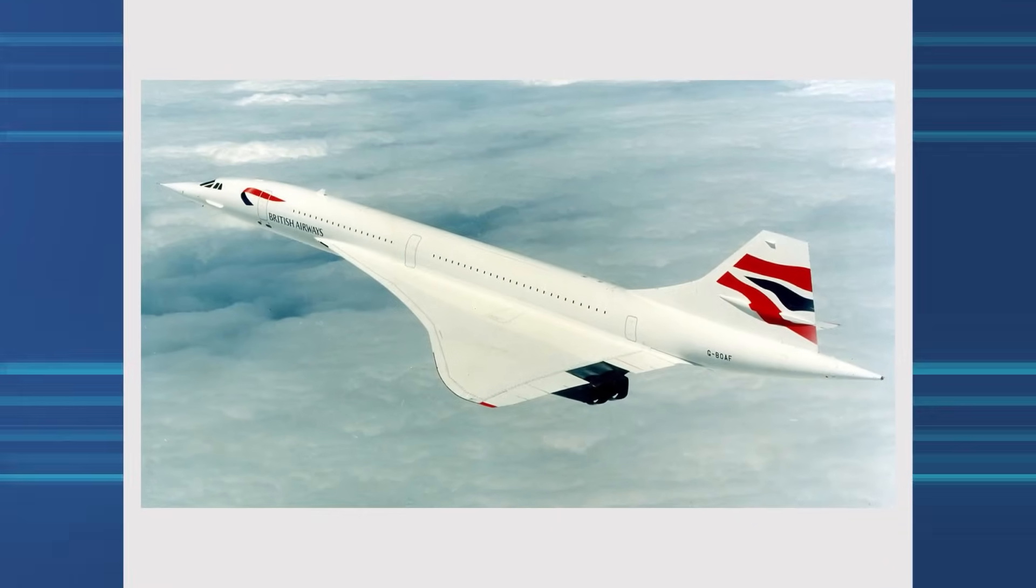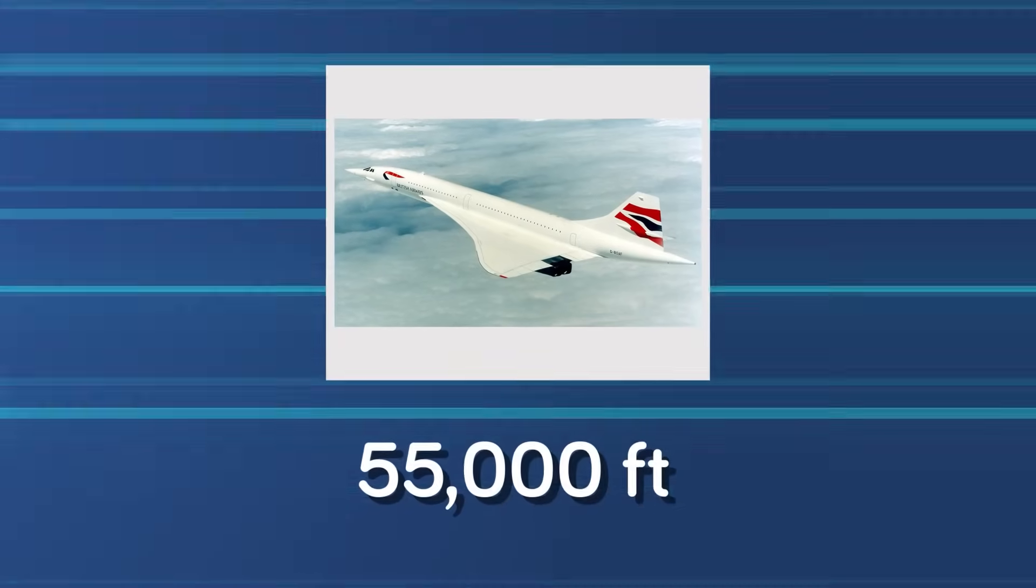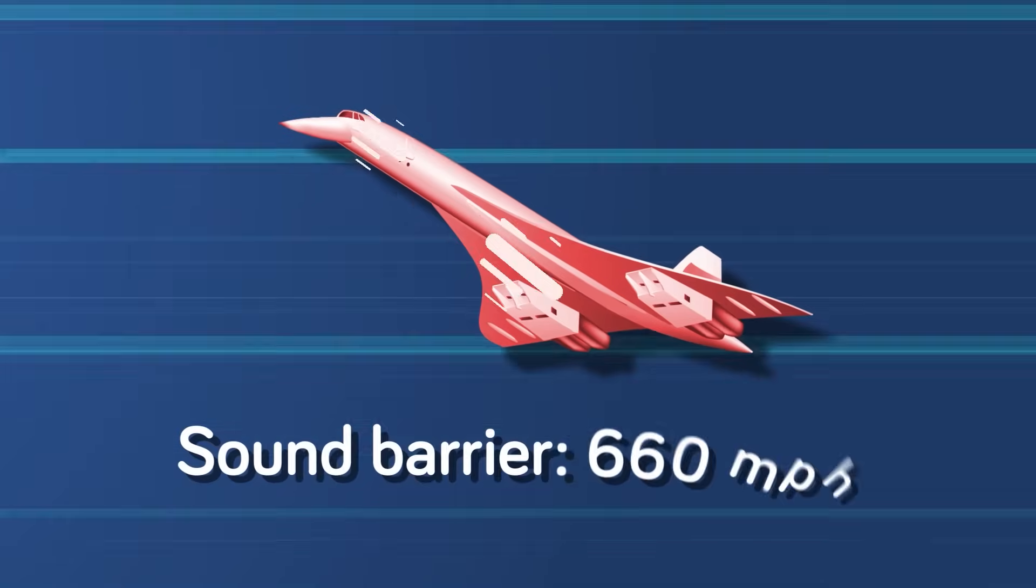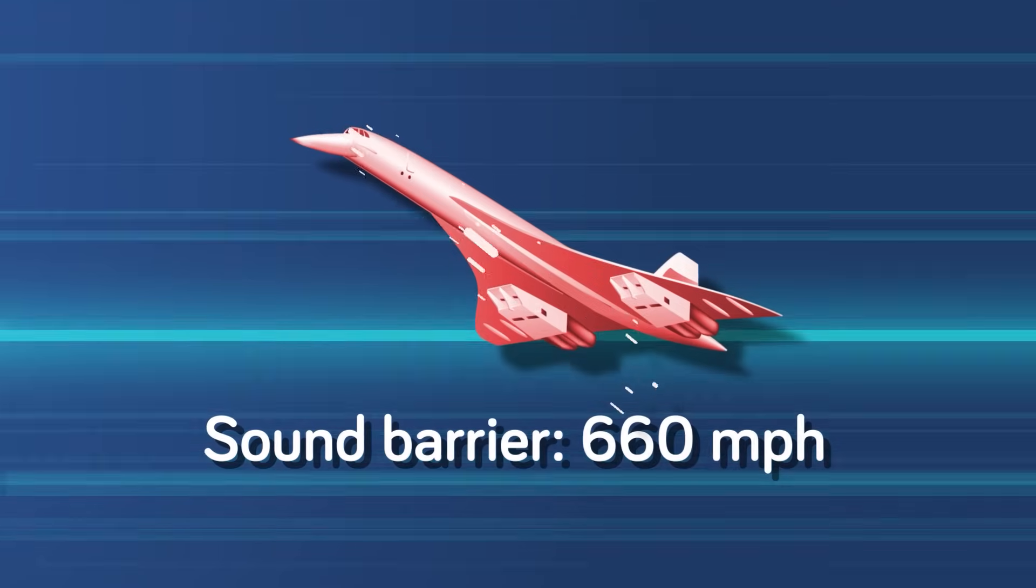When the Concorde was still in operation, it flew passengers across the Atlantic Ocean at about 55,000 feet above sea level. At this altitude, the sound barrier is approximately 660 mph, almost 100 mph slower than sea level.